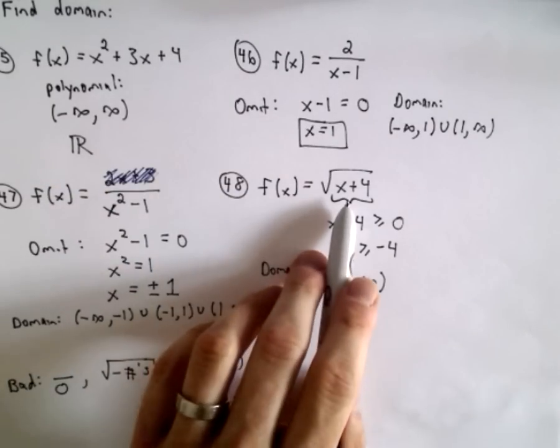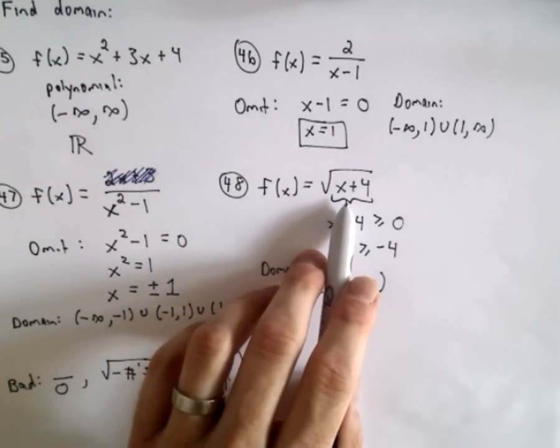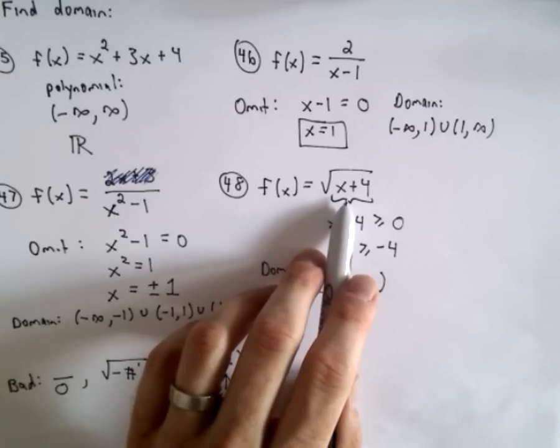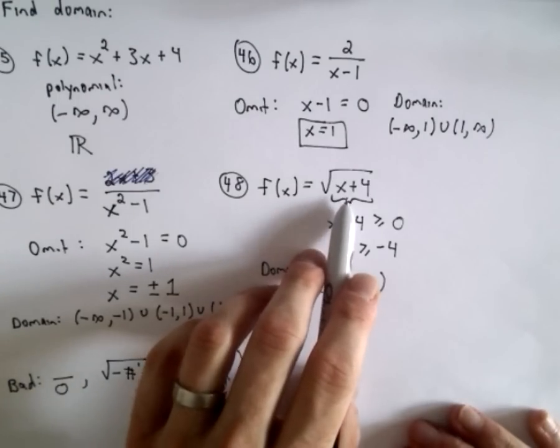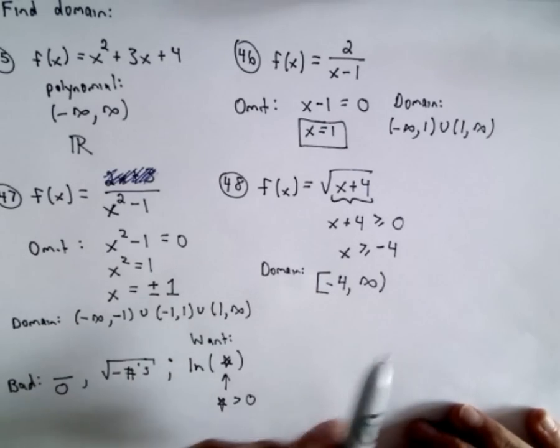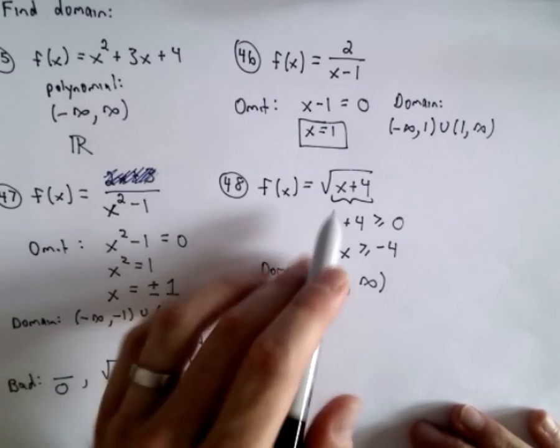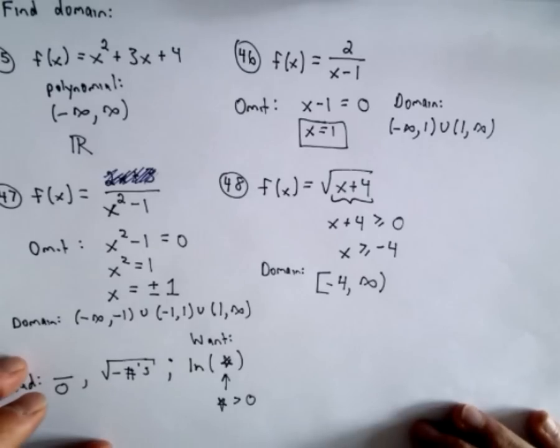So you could have had a more complicated expression underneath the radical. It could have been quadratic or a rational expression. And the good thing is, we've already seen videos on how to solve those types of inequalities. So in that case, you would just proceed as in one of the previous videos if you had a more complicated type of inequality.